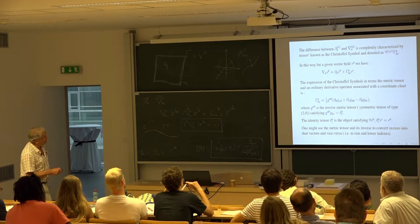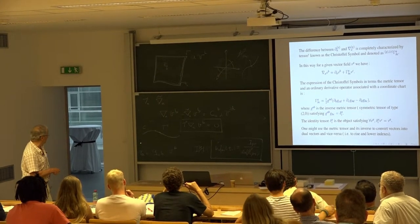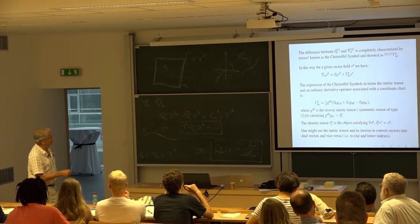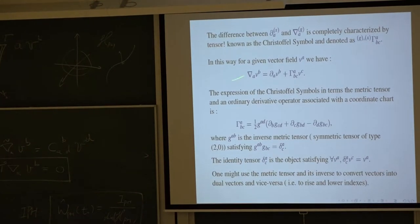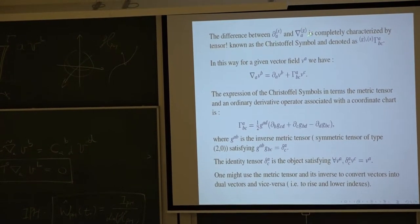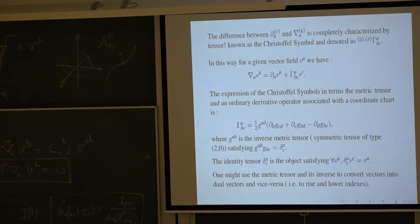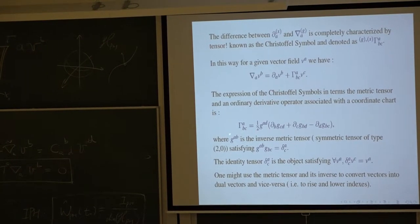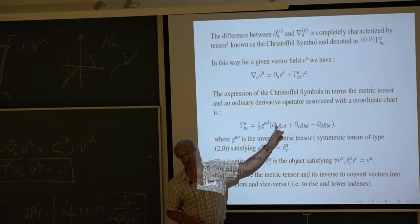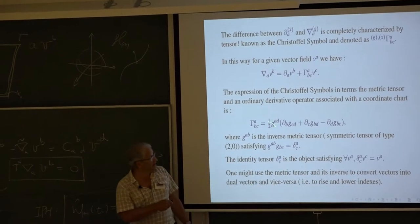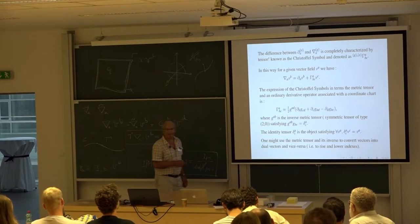Given a chart and the derivative operator associated with it, one can compute the expression for the Christoffel symbol by the requirement that the covariant derivative operator annihilates the metric. This object has an expression in terms of ordinary derivatives of the metric, which of course need not vanish. This is a straightforward calculation that comes from the requirement I set.